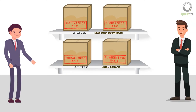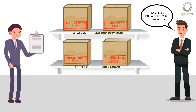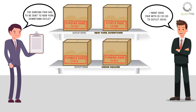When your boss asks you to send a shoe pair with ID123 to the outlet with IDX45, you will not run around in your storage room checking each and every pair. You will simply take out your register, have a look at it, and shout the order that the dancing pair has to be sent to the New York downtown outlet.